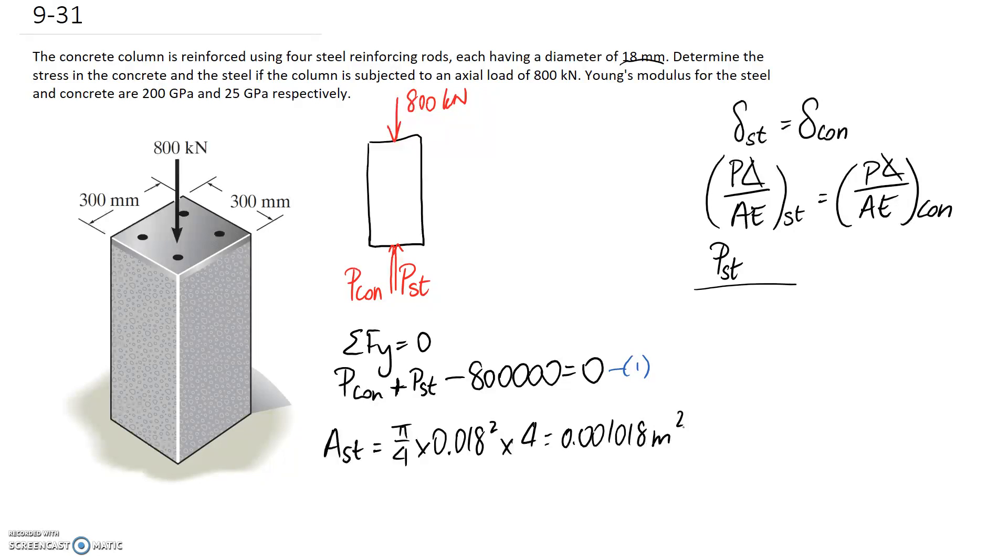While I'm here, I may as well find the area for the concrete. So we know that it's going to be the difference between the outside area of the square and the four different rods. So in meters that's going to be 0.3 times 0.3, that's the area of the square, minus what we got here, 0.001018. So we end up with a concrete area of 0.088982 meters squared.